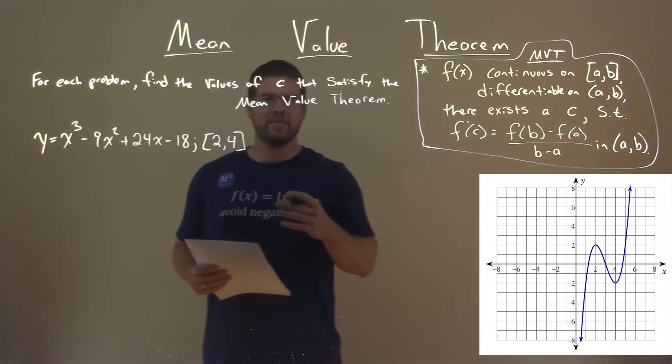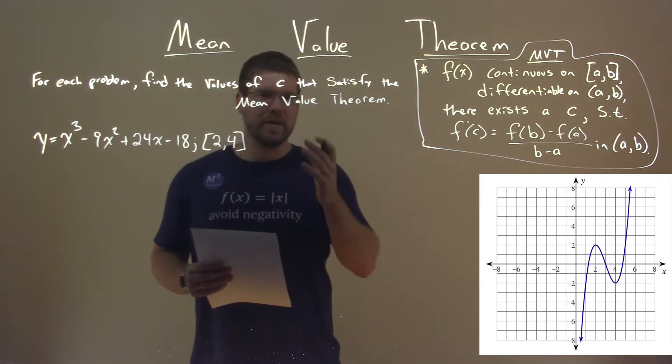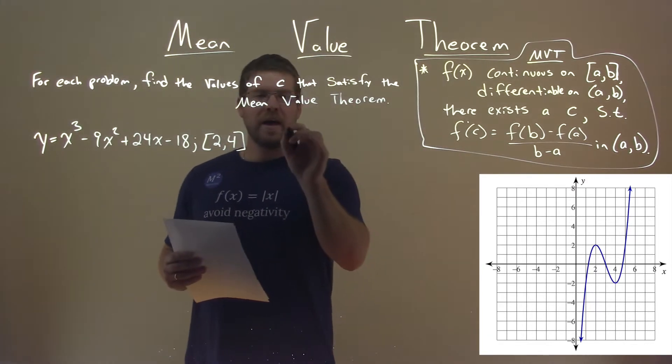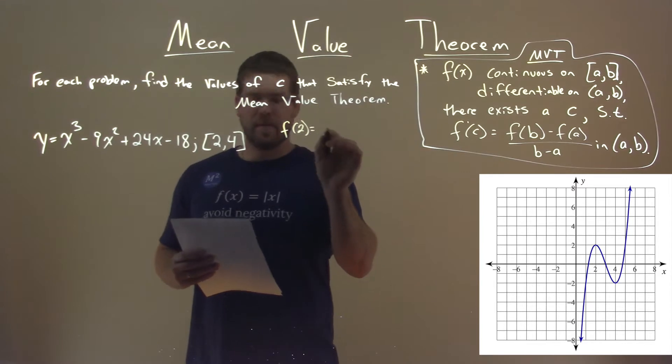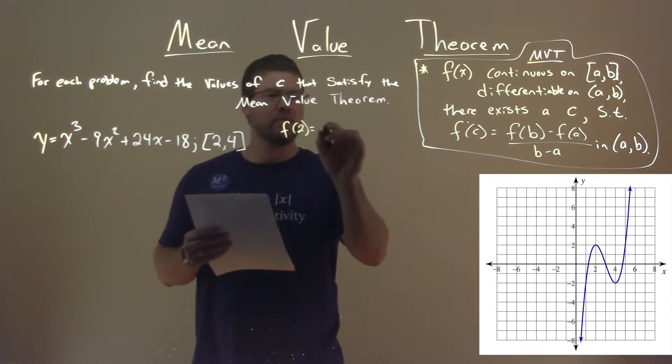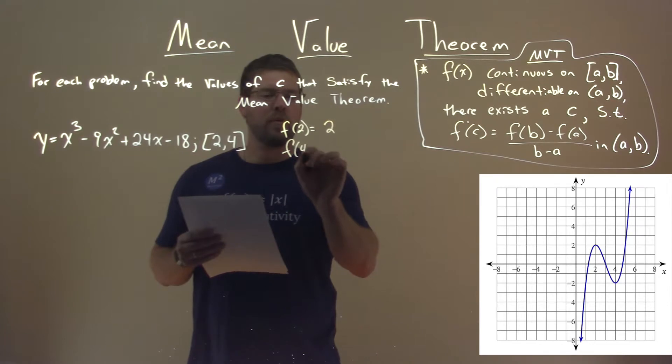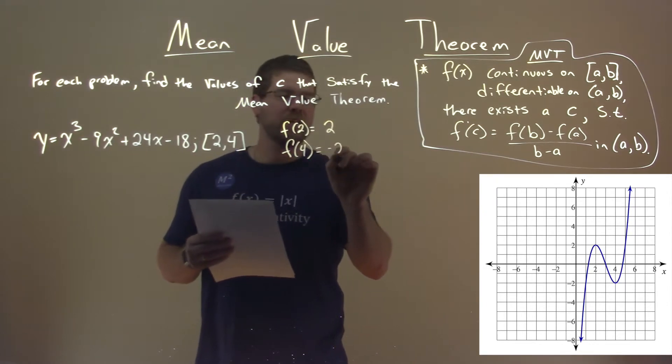Now, the Mean Value Theorem tells us we need to find f of 2 and f of 4. We need to find those values. So, f of 2, and I found that for you, f of 2, plug it into our function here, is just a 2, and the f of 4 is a negative 2.